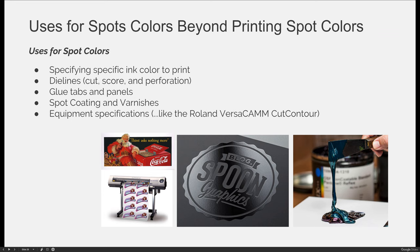When we talk about spot colors, there are some go-to uses you should know. They are used to specify ink colors to print, dye lines, glue tabs and glue panels, and spot coatings and varnishes. If you do an overall coating, you don't need a dye line for that. You can also use spot colors for specific equipment needs — for example, we use the cut contour spot color swatch to activate dye cutting or plotting on our Roland VersaCam printer in the lab.